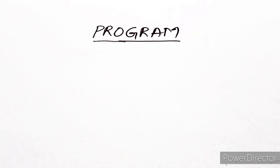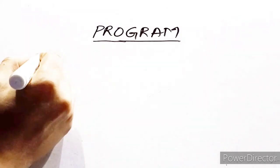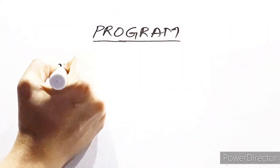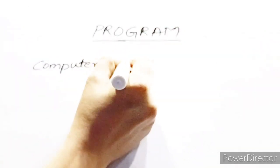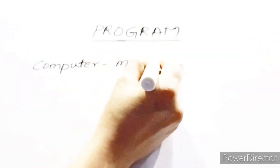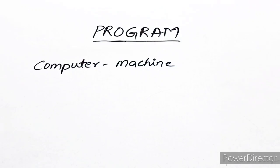Hello listeners, today we will learn certain computer terminology that we use in every computer programming language. As all of you know, a computer is an electronic device — it is nothing but a machine which never works on its own. We have to give instructions to the computer to perform a particular task.